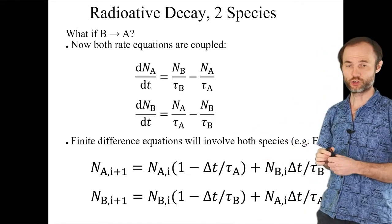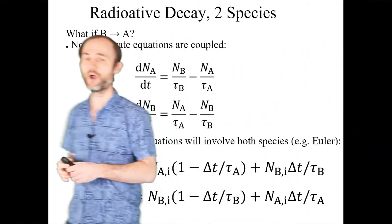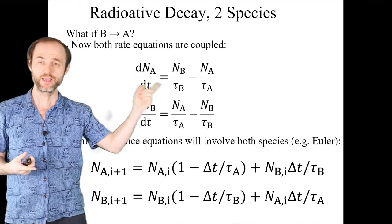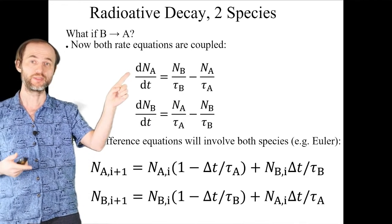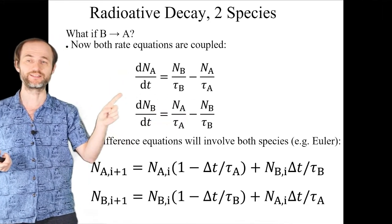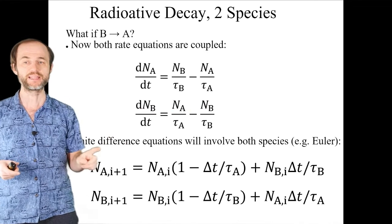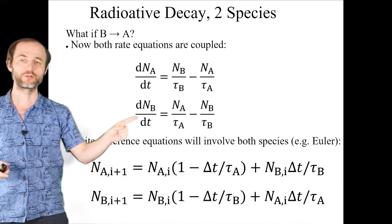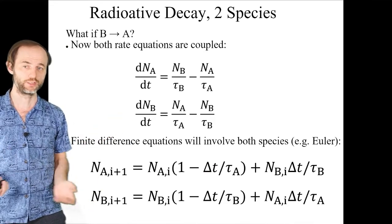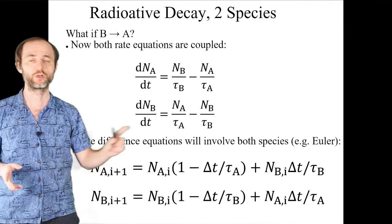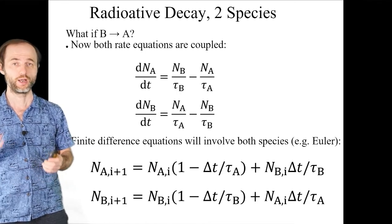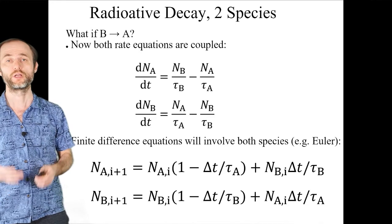Here's how the discretization looks. We replace N_{A,i+1} - N_{A,i} as an approximation to the derivative, multiply both sides by delta t, and get the discretized equation. Similarly for the second equation for B. We're using the simplest numerical method — the Euler method — which has second-order local truncation error, or first-order global truncation error.